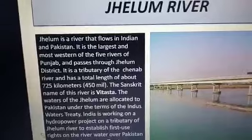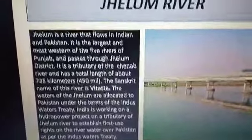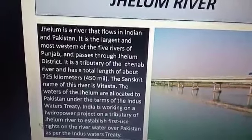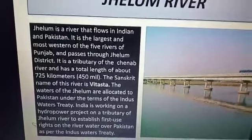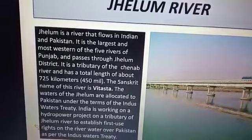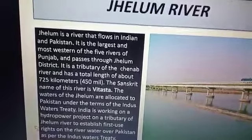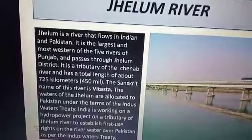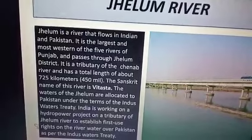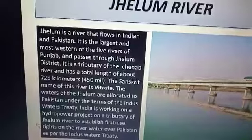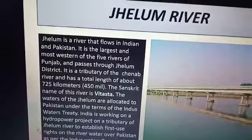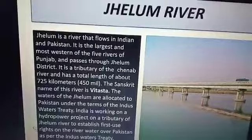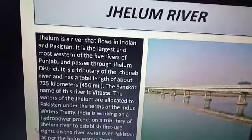The first left bank tributary is the Jhelum. It rises from a spring at Verinag, situated in the southeastern part of the valley of Kashmir. It flows northward from its source to Wular Lake, and further southwestward until it enters a gorge cut through the Pirpanjal range. It turns northwest below Uri, then south below Muzaffarabad, continuing until Mangla is reached. Between Muzaffarabad and Mangla it runs roughly along the Indo-Pakistan border, joining the Chenab at Jhang in Pakistan.